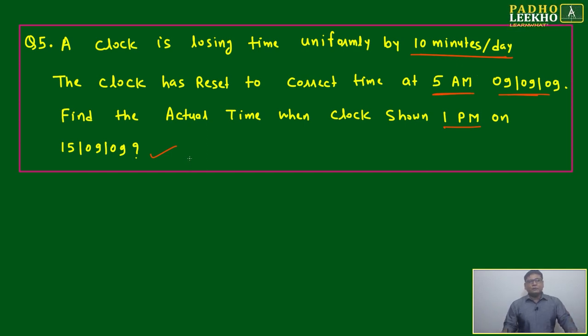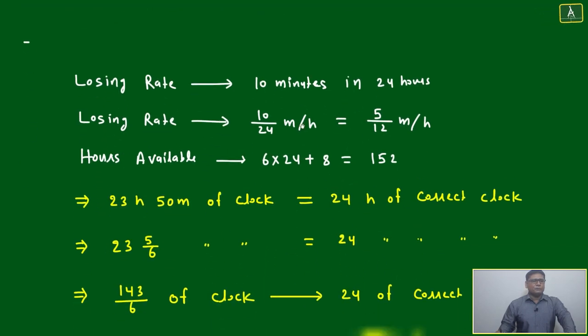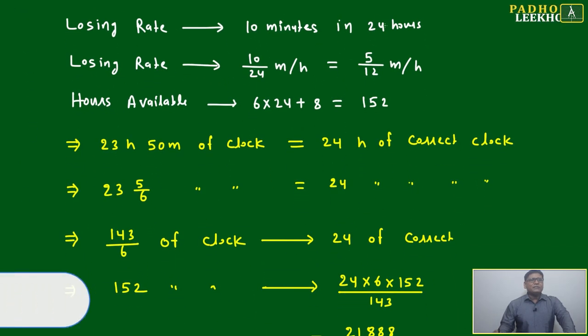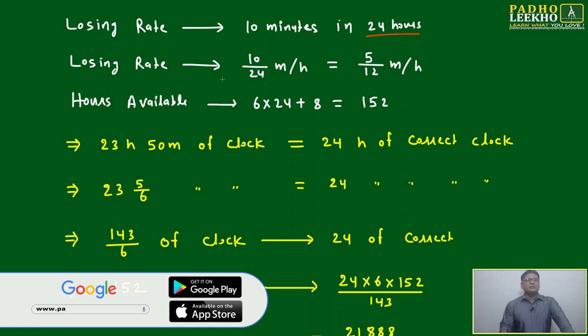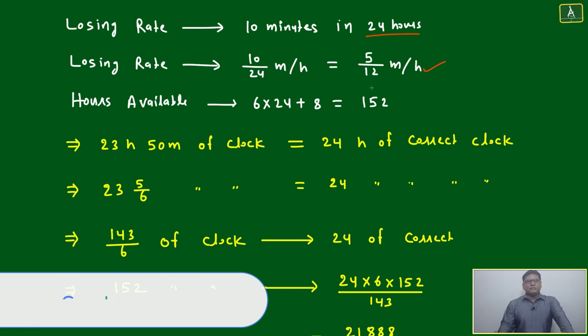The clock is losing 10 minutes per day. First, we have to calculate from 9th September to 15th September how many minutes of time loss. Based on that, we can calculate the actual time at 1 PM. Losing rate: 10 minutes in 24 hours = 10/24 minute per hour, or 5/12 minute per hour.